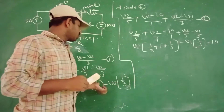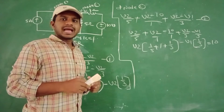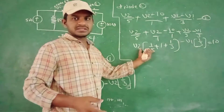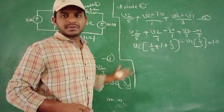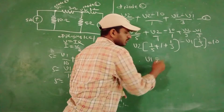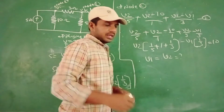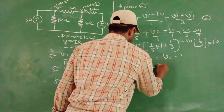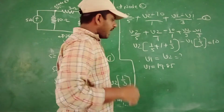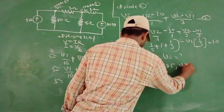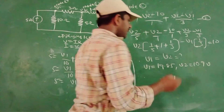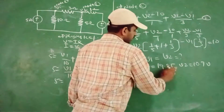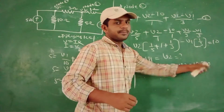If you want to simplify those two equations, finally we can get both V1 and V2. Solving both node 1 and node 2 expressions, we are finally getting V1 is equal to 90.85 volts and V2 is equal to 10.9 volts. If you have any doubt, please put it in the comment and I will give you the solution.